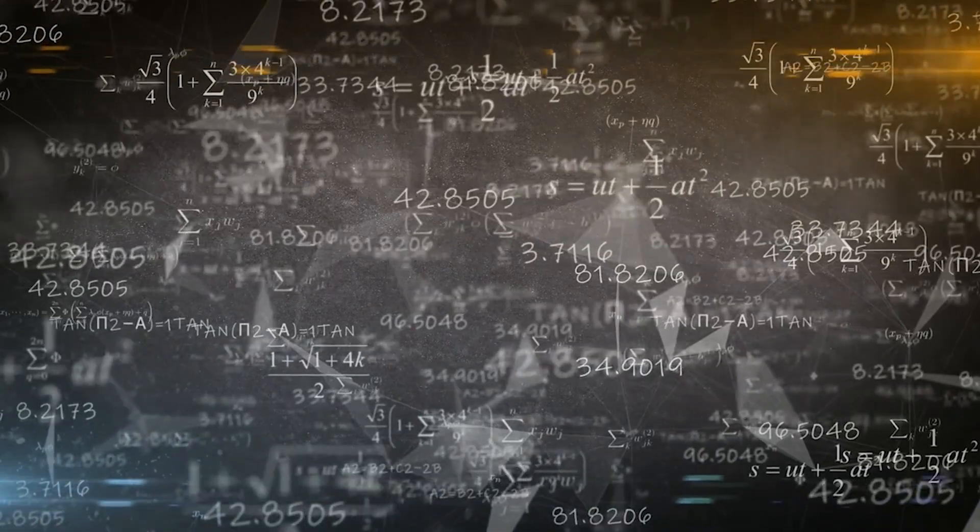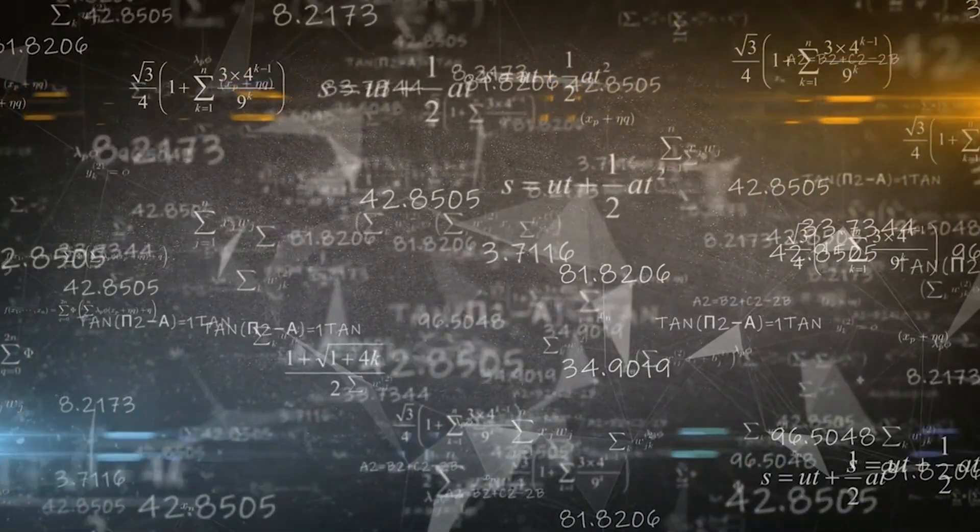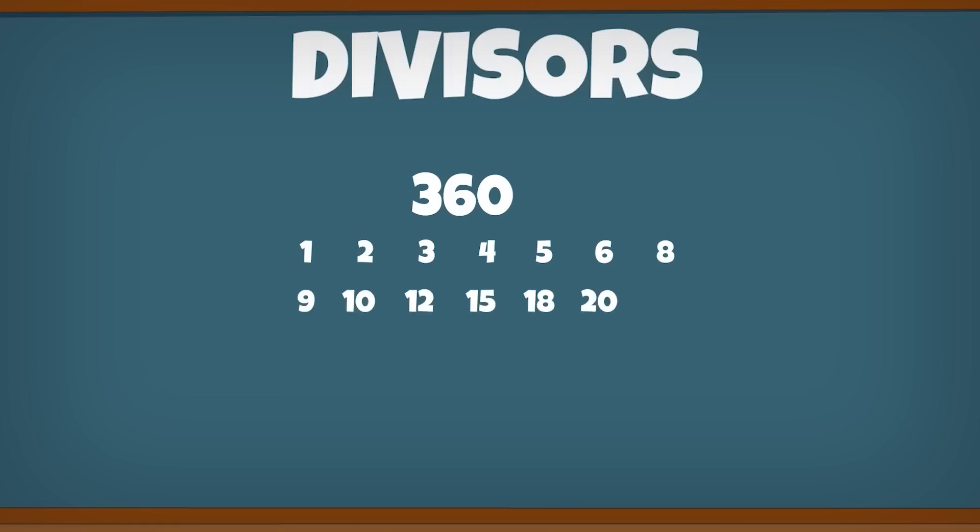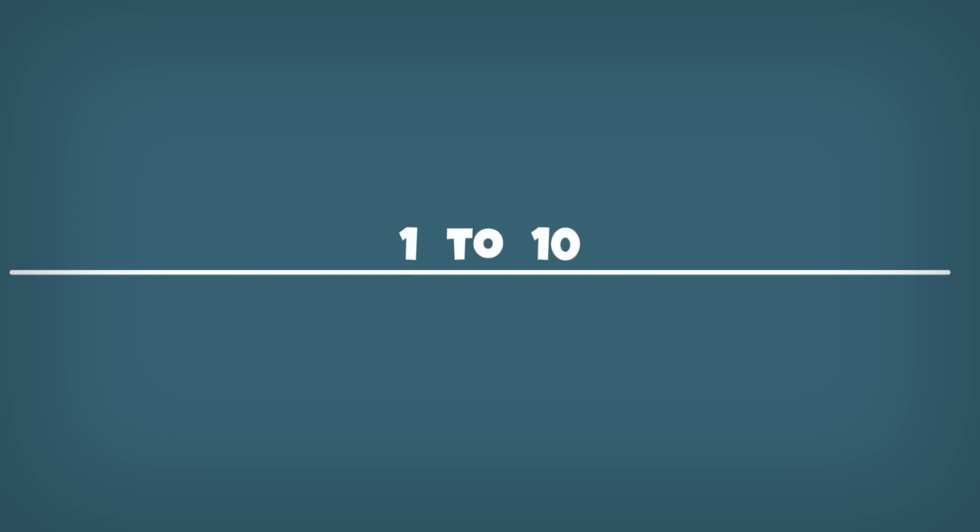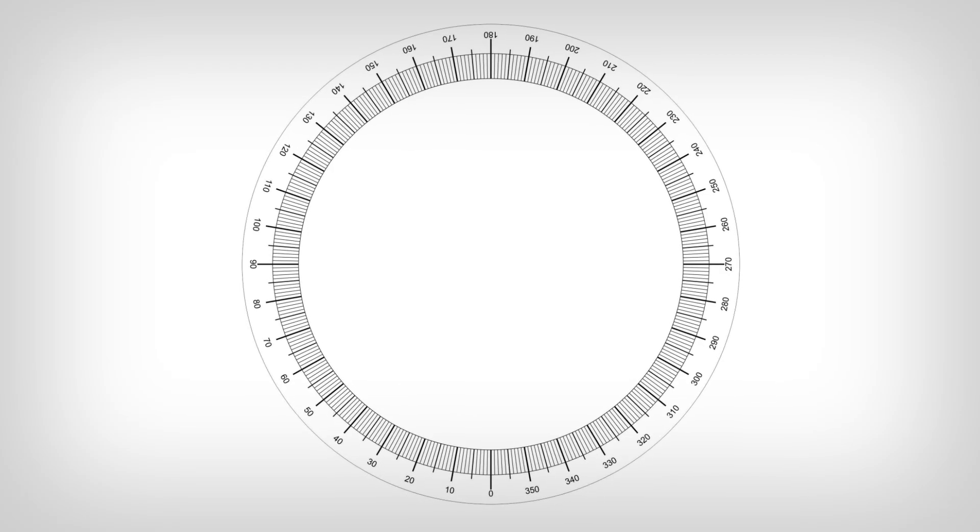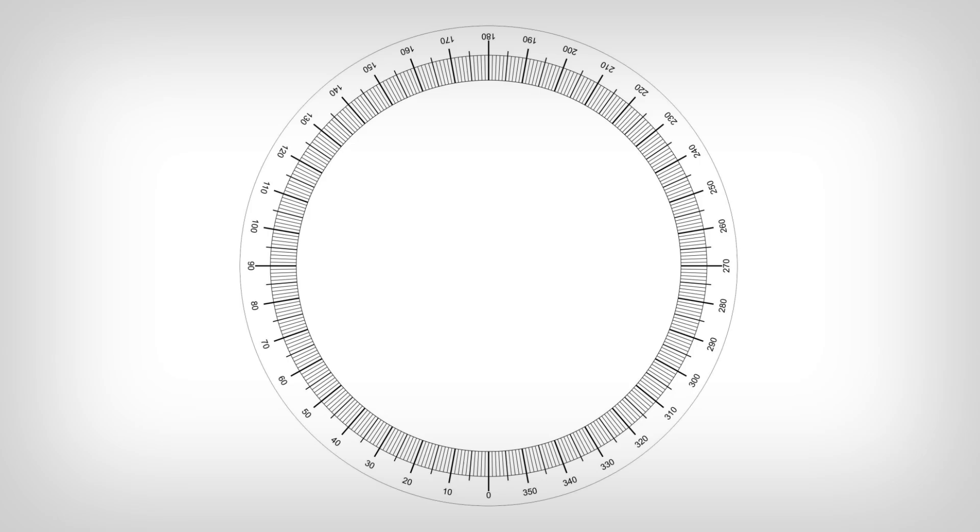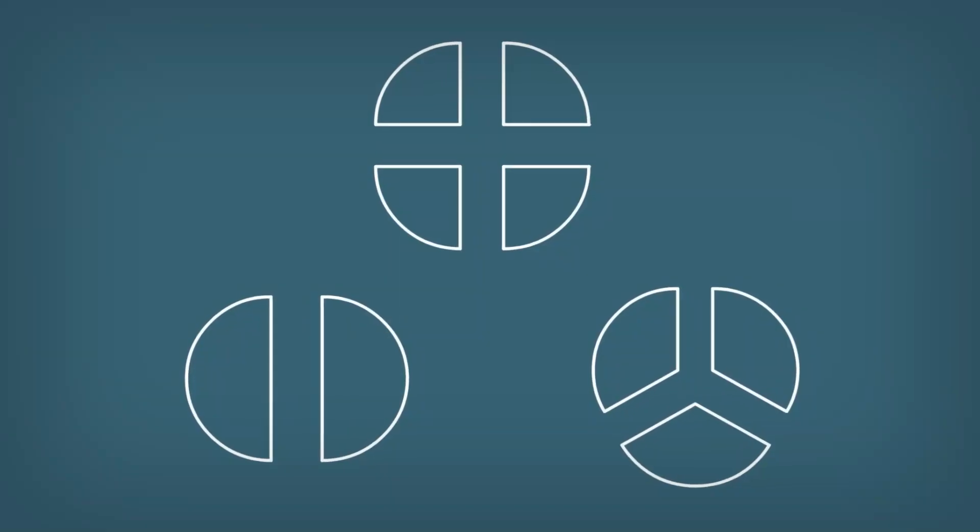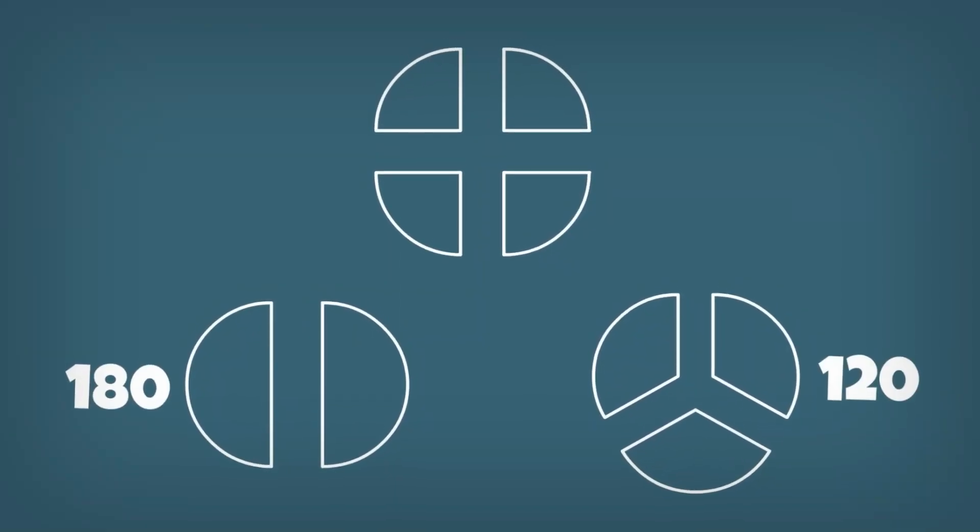Moreover, the mathematical elegance of 360 extends beyond being a highly composite number with 24 divisors. It's also the smallest number divisible by each integer from 1 to 10. Its high divisibility makes it the perfect option for splitting circles into equal segments, providing a precision and flexibility that other numbers can't compete with.